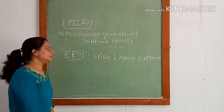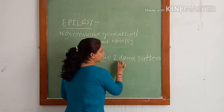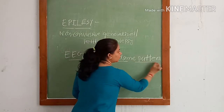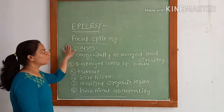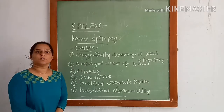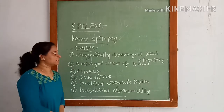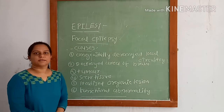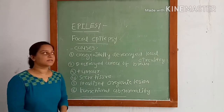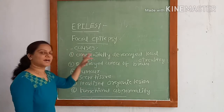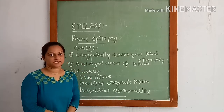EEG shows a spike and wave pattern. Focal epilepsy, or partial seizures, is mainly of two varieties: simple partial and complex partial seizures.